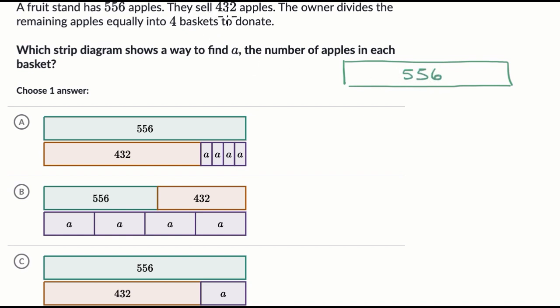They sell 432 apples and have some amount left over. So this is the amount that we started with and then they sell 432 apples. So 432 would look something like this. I'm approximating it. So this is 432.